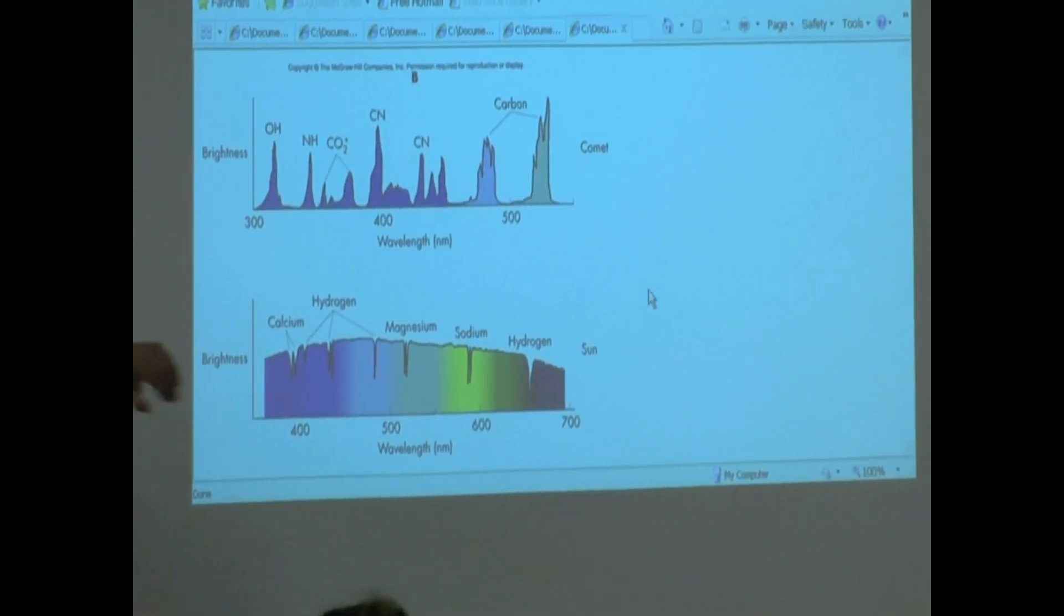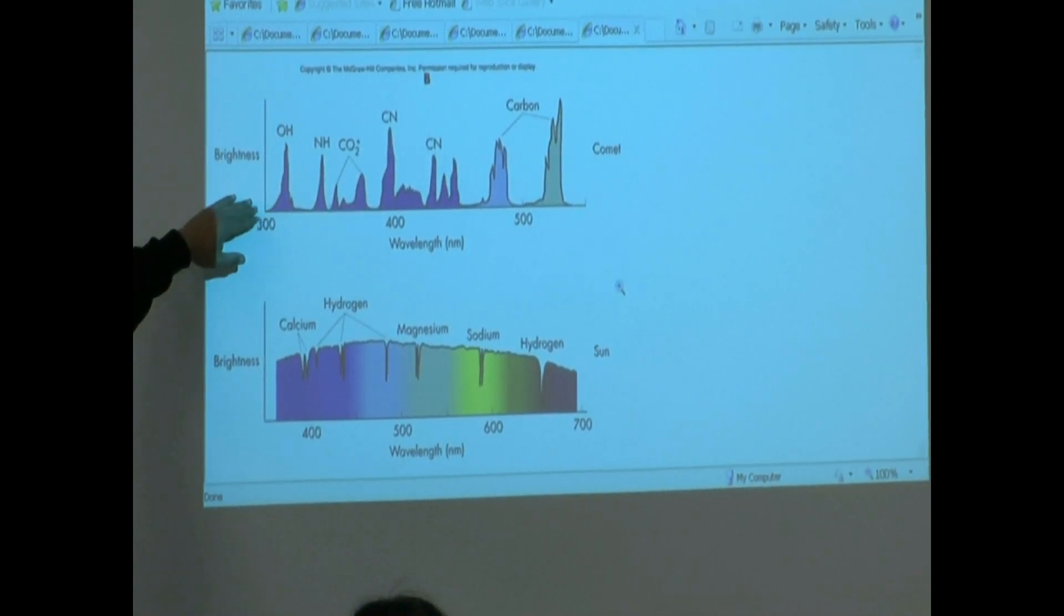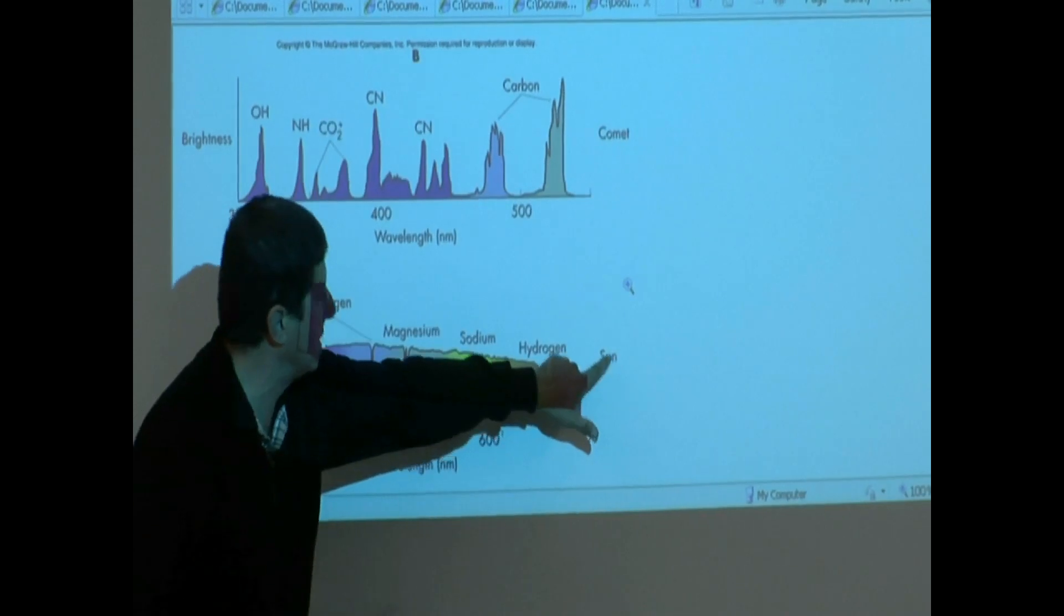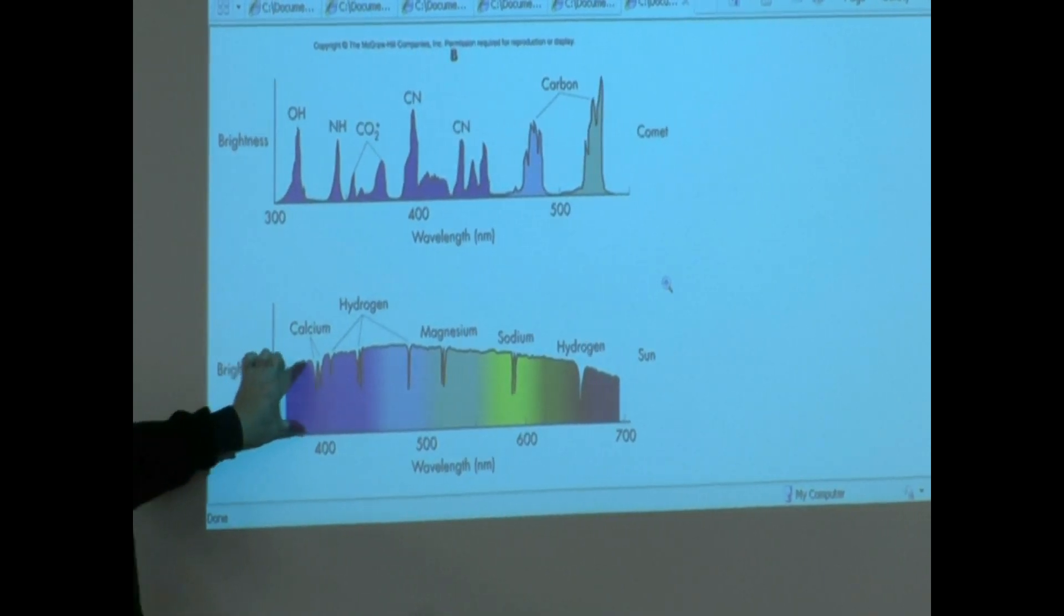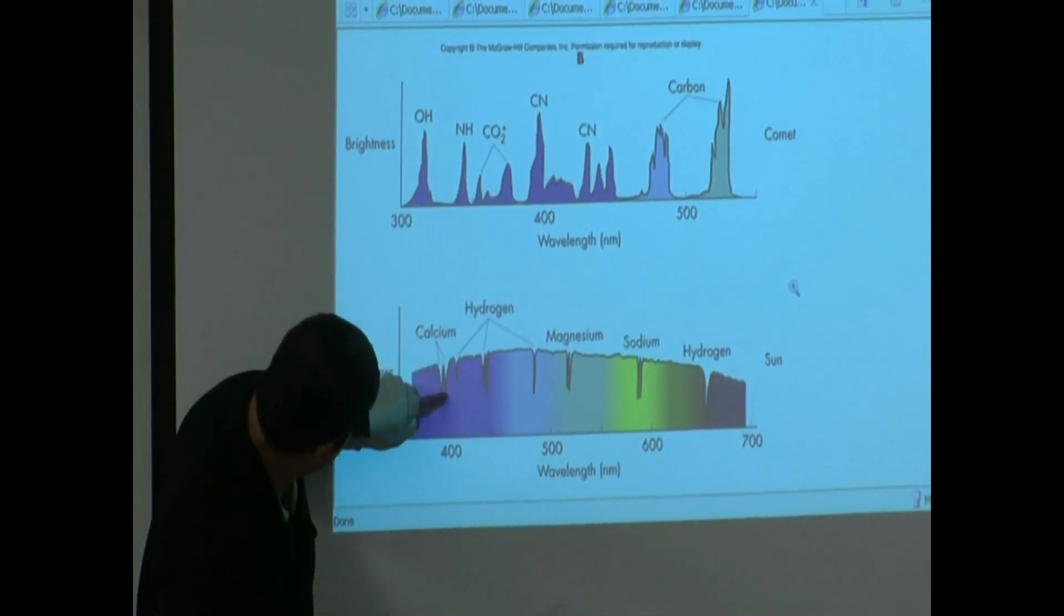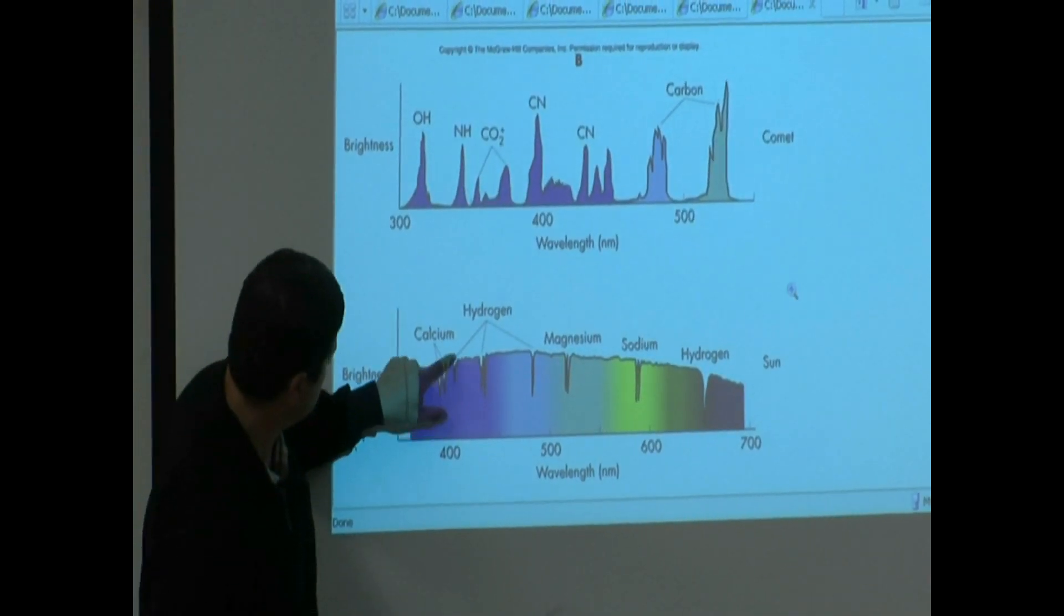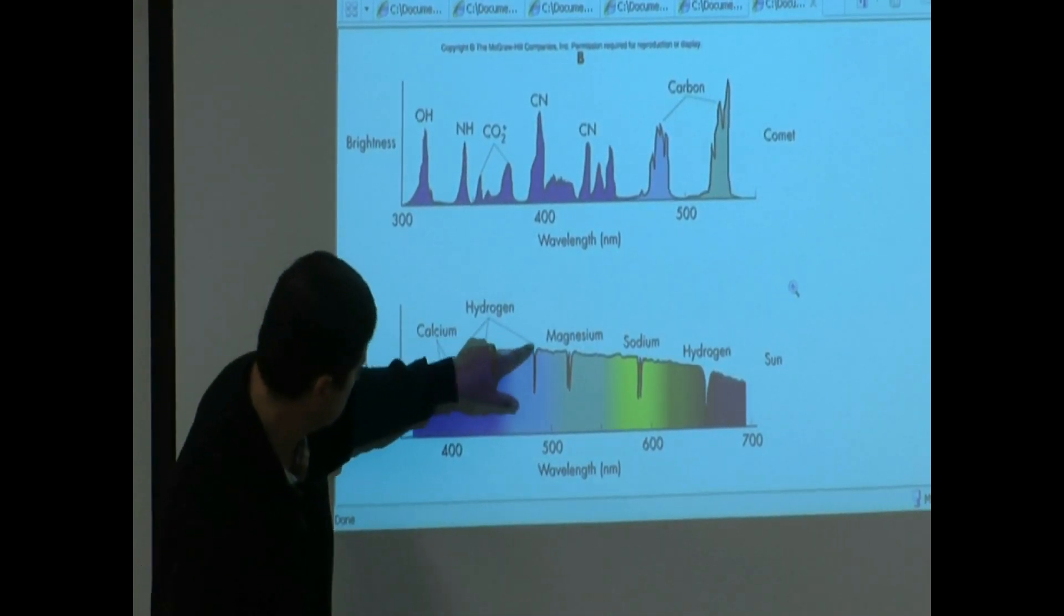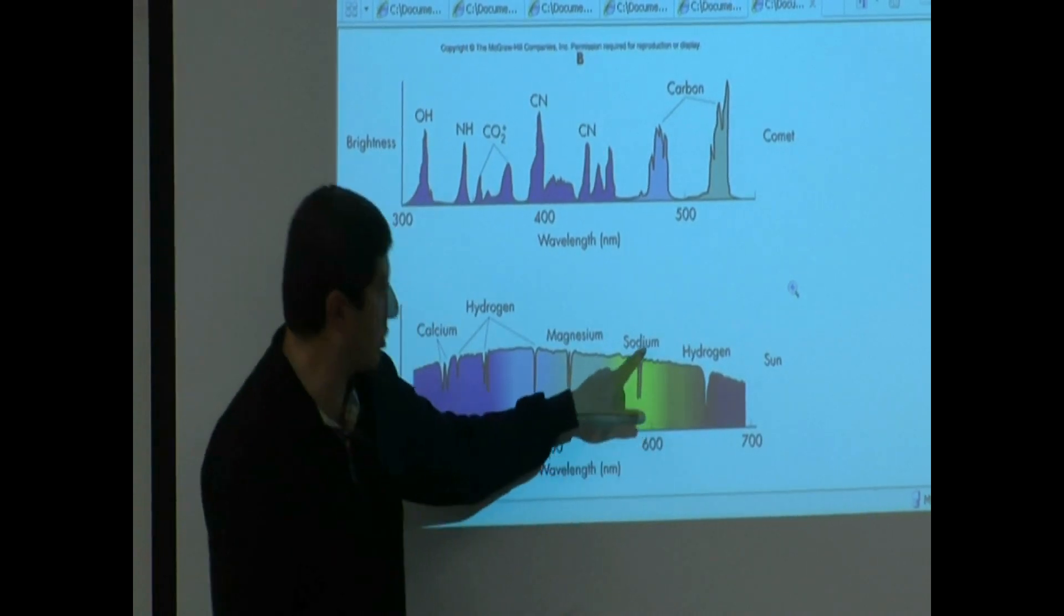This shows you the spectrum of a comet. The bottom one shows you the spectrum of the Sun. Comet, Sun. How are they different? The Sun is a continuous spectra, but certain lines are what? Absorbed. So since the Sun's atmosphere has calcium in it, it absorbs it. Hydrogen 410, 434, 486, 656 - absorbed, absorbed. And then 656 is way over there. Magnesium absorbs it. Sodium absorbed. How about comet?